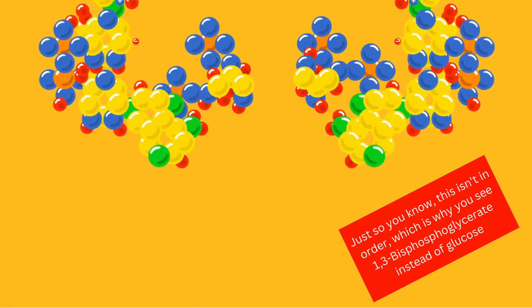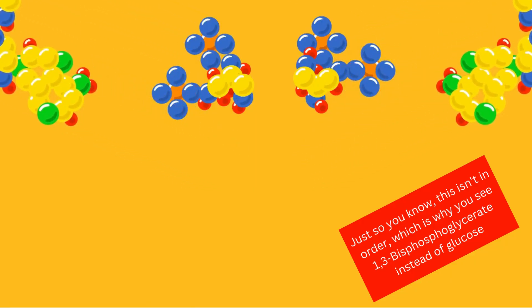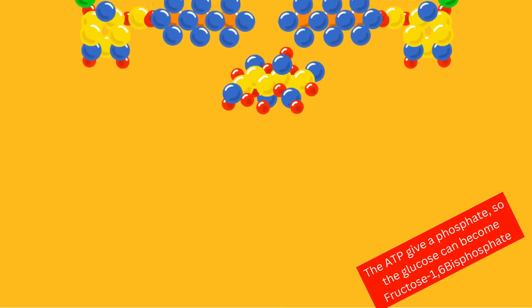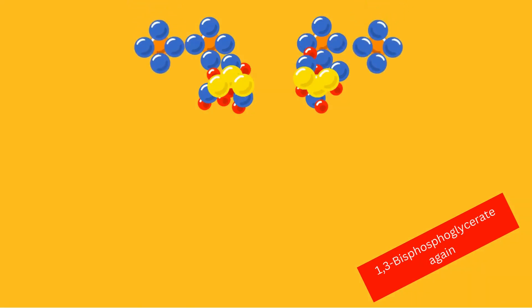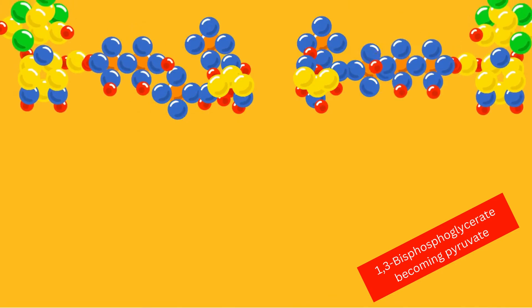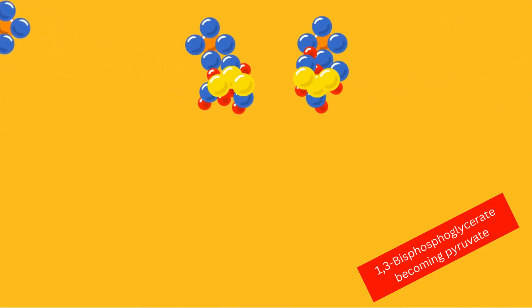The NAD+ molecules get reduced to NADH by the addition of a hydrogen atom. The two ATP are used to fuel the breaking of glucose into the two pyruvates. The ADPs turn into ATP by the addition of a phosphate group.